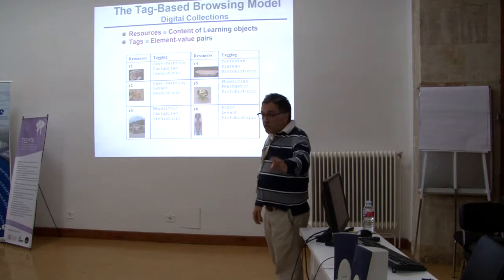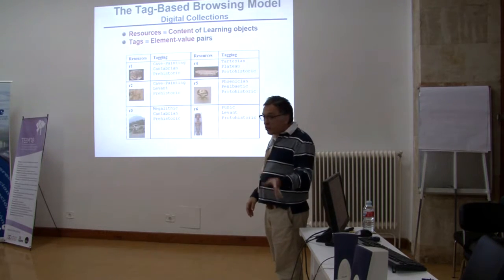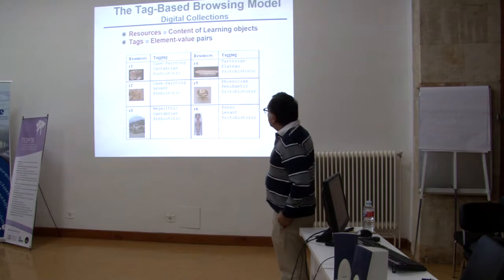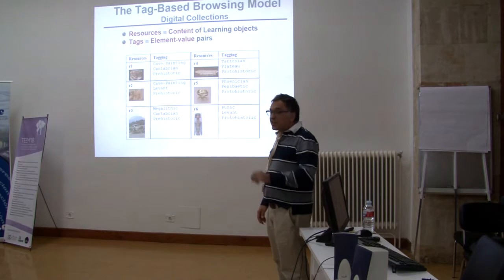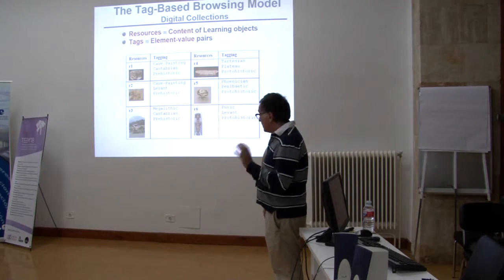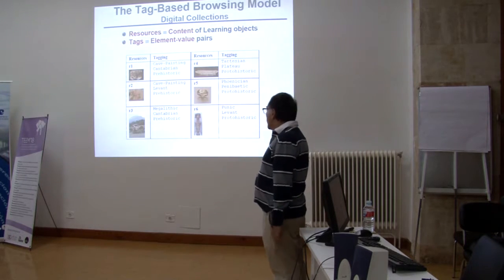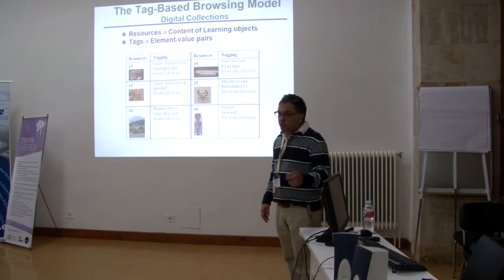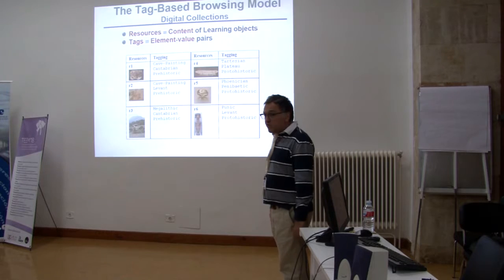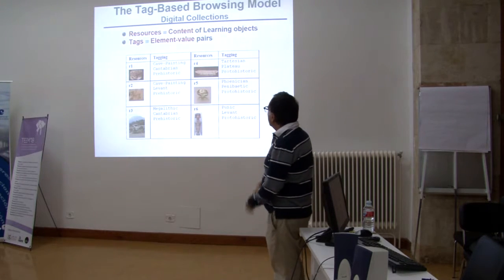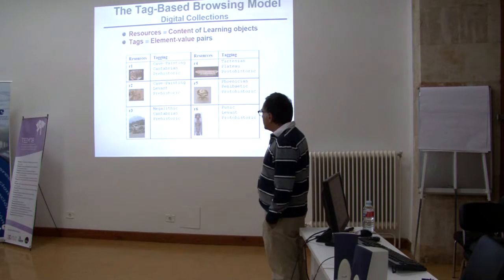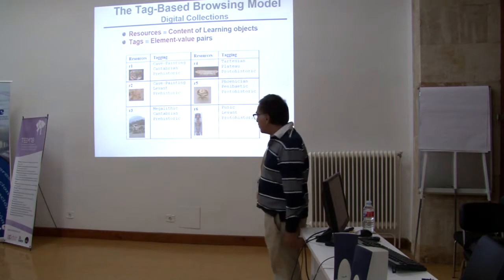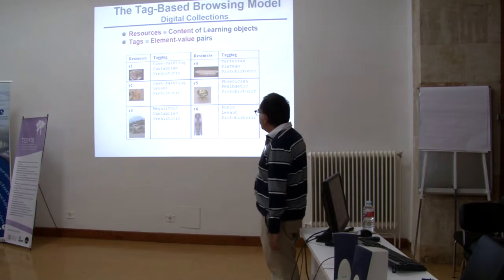Concerning the abstraction of learning object repositories as digital collections, internally the digital collections in CLAVI are collections of resources — resources associated with the contents of the learning object and also with descriptive tags associated with these resources. For instance, you can see here a small digital collection with six resources, in particular resources corresponding to prehistoric and proto-historic objects in the artistic period in Spain. Each resource has associated a set of descriptive tags. For instance, the first resource is a photograph of an artistic object, and has associated the tags cave painting, Cantabrian, and prehistoric.